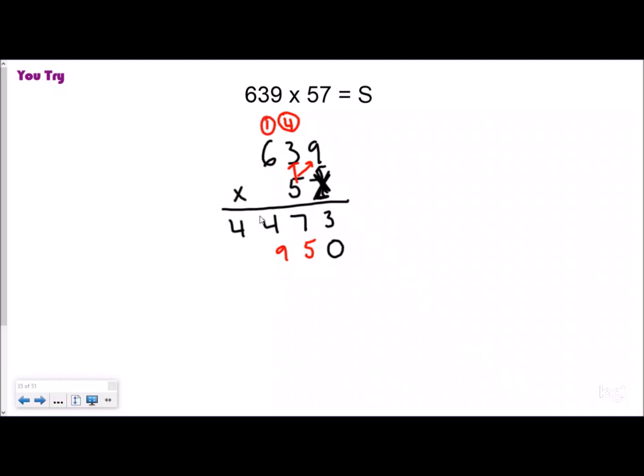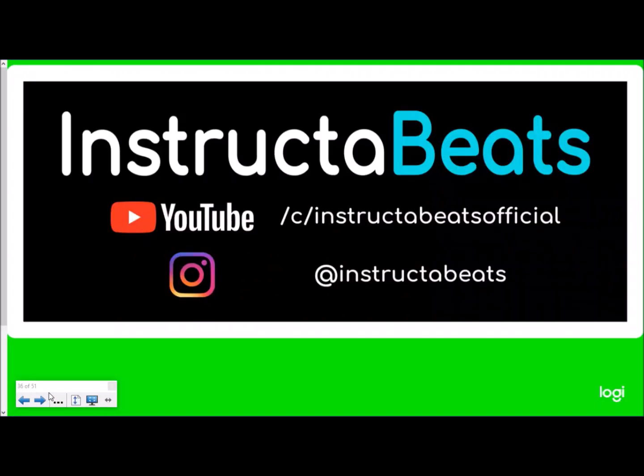Five times six is 30 plus one is 31. Now I'm going to add these two products together. I have three, seven plus five is 12, regroup your one. One plus four is five, plus nine is 14, regroup your one. Five, five, six, nothing there so just a three, and the product is 36,423.